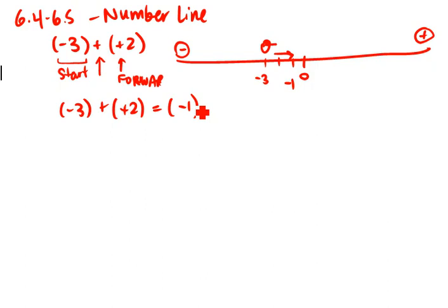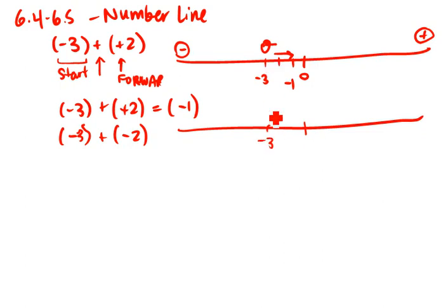Likewise, if we took a negative integer, we have minus 3 plus negative 2. If I take Bob on his line again and he starts at negative 3, let's just put him there.